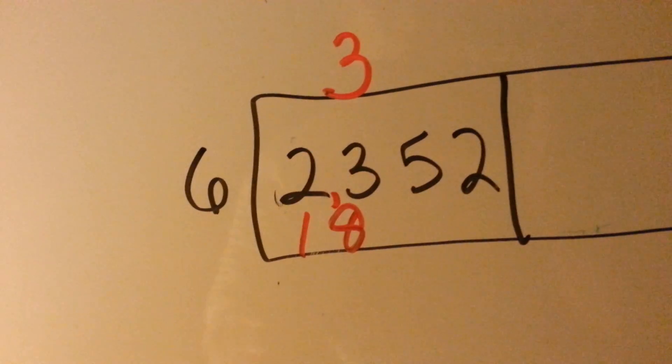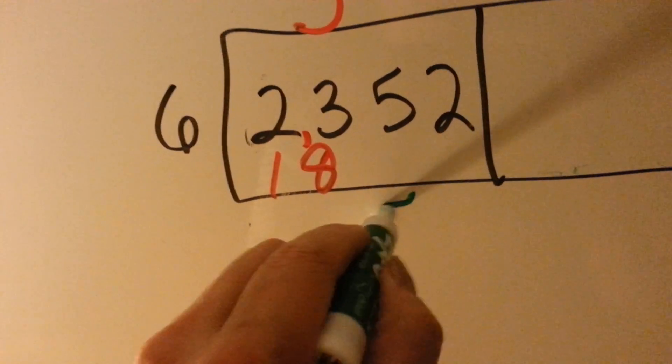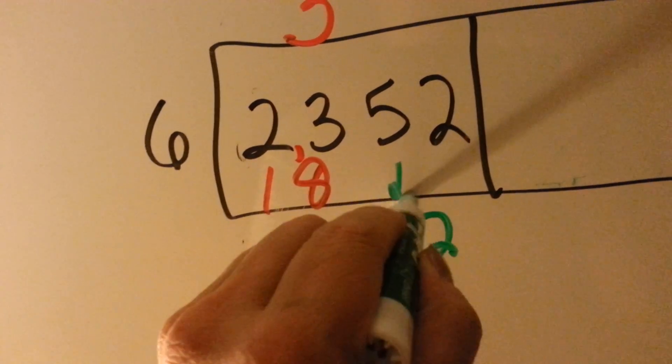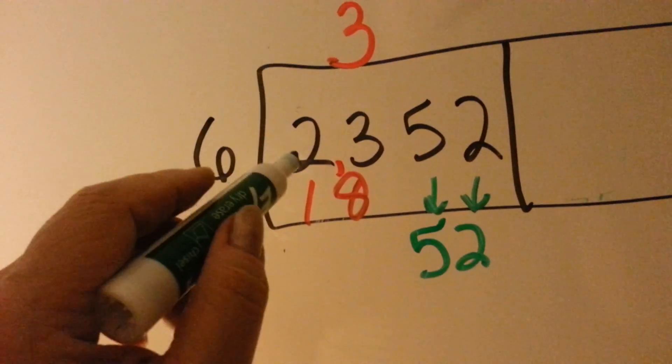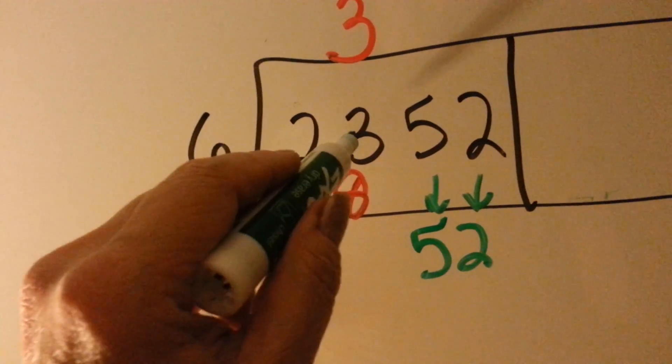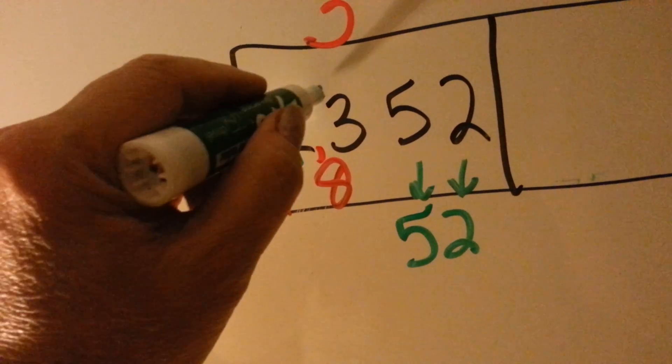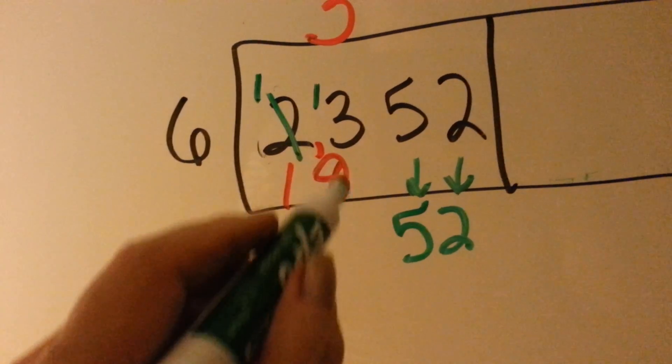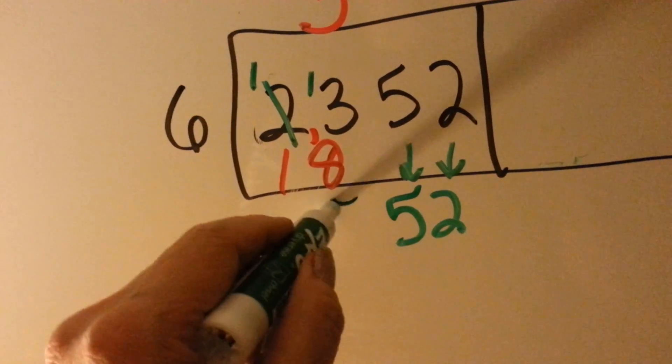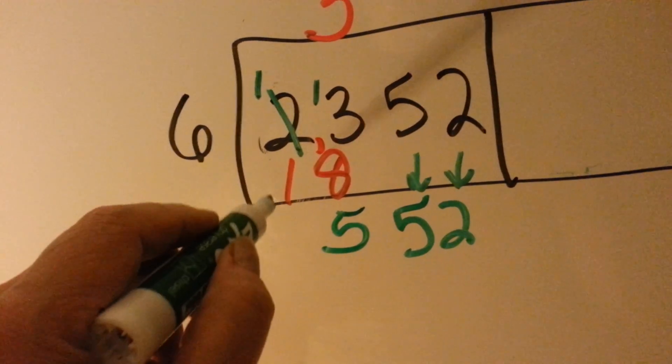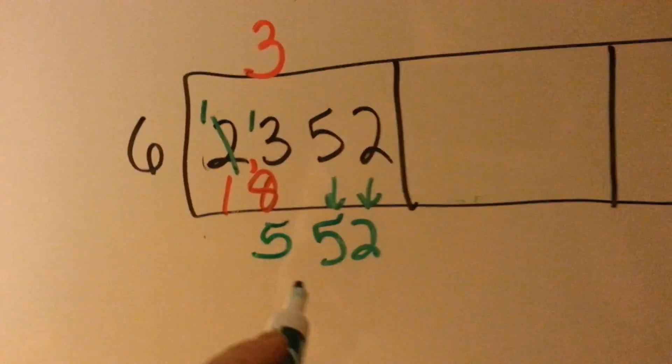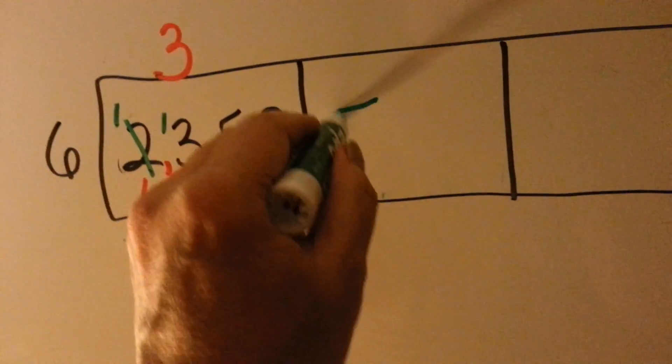Okay? So now we're going to do subtraction. We're going to bring our 5 and our 2 down, right? We've got to do that. And 8 from 3, you can't do that, so we have to borrow from the 2. That becomes a 1, and the 3 becomes a 13. 13 take away 8 is 5. 1 take away 1 is 0, so we just leave that. And now the 552 goes into this box.